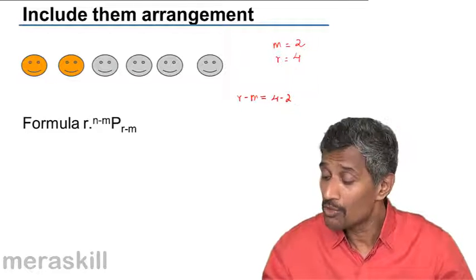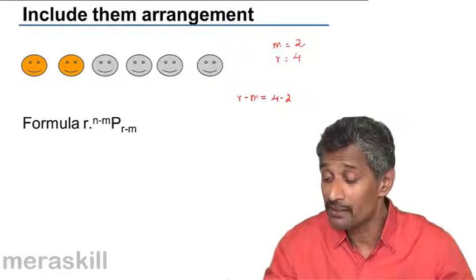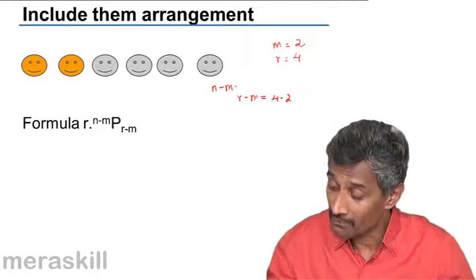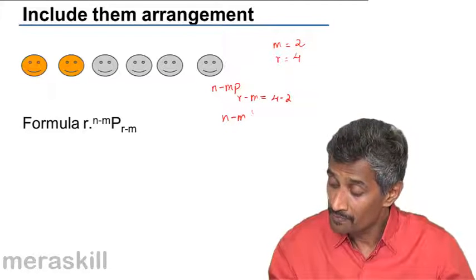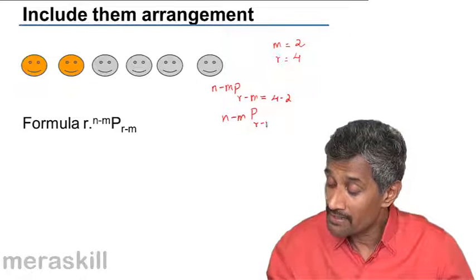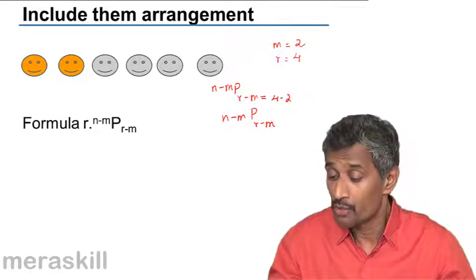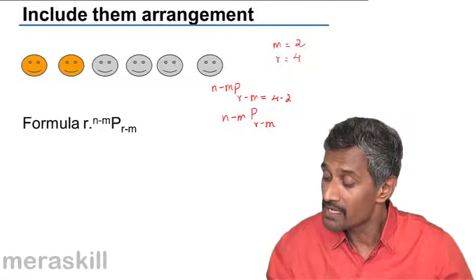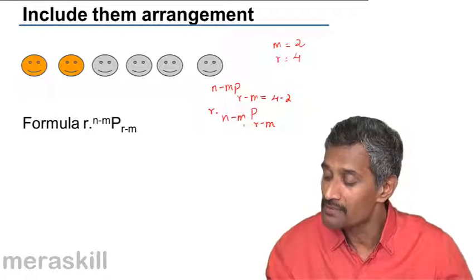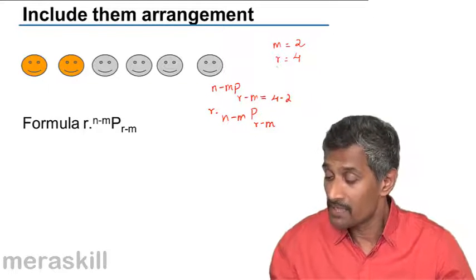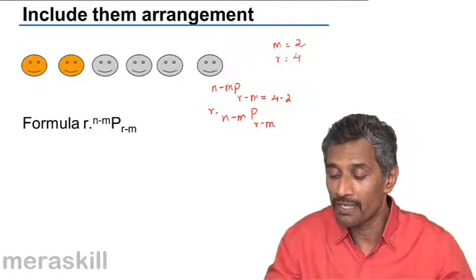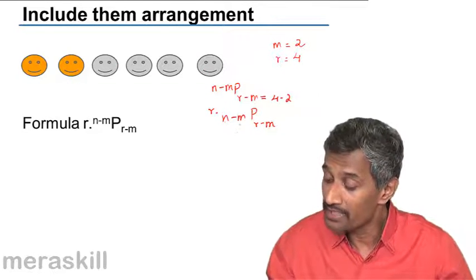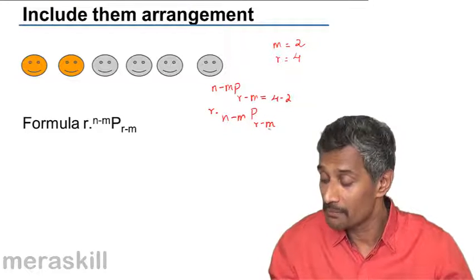But you have to pick them up — 2 have been picked up, so the number of available options is N minus M. You have to pick up 2 out of 4. Hence the total available still remains N minus M. So out of N minus M, we need to pick up R minus M. But there are 4 possibilities of arranging if you want to pick up any 2, and hence you will have 4 times. So it is going to be R times (N minus M) P (R minus M).